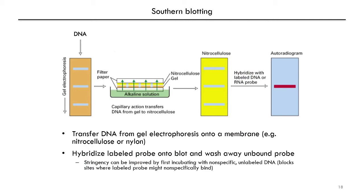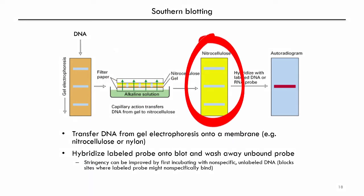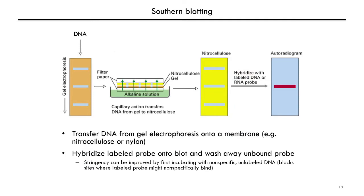Coming back to the details for carrying out a southern blot experiment, you would perform this to detect DNA that you have separated by gel electrophoresis. To detect specific sequences of DNA, you would use hybridization probes — DNA fragments that can anneal complementarily to your target sequence and are labeled either radioactively or non-radioactively. You run your DNA on a gel, separating by size, then transfer the DNA onto a membrane that binds DNA, such as nitrocellulose or nylon. This membrane with transferred DNA is also called a blot, and it can be treated to permanently fix the DNA.